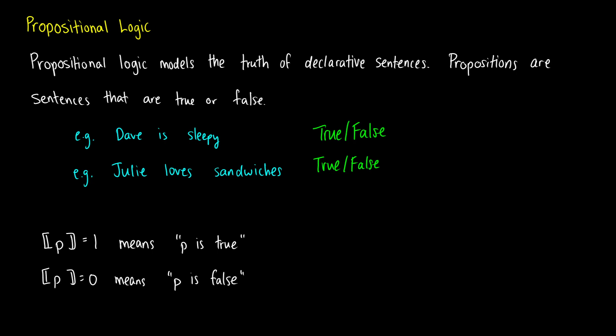Things that are not propositions include questions. If I say 'How are you today?' you can't just say true or false to that, so that's not a proposition. You also can't have commands as propositions — like 'get me that tire': true or false doesn't make any sense. So propositions are things that can be true or false.